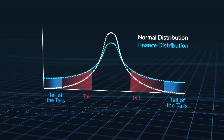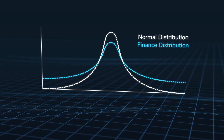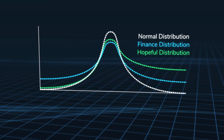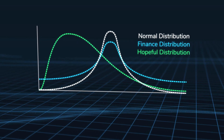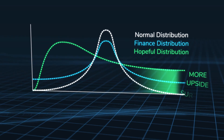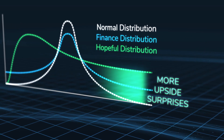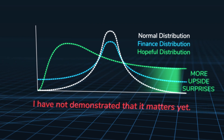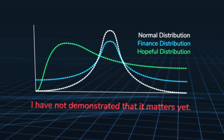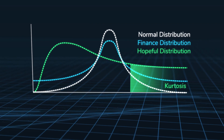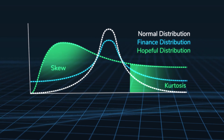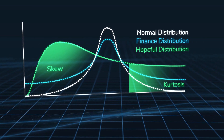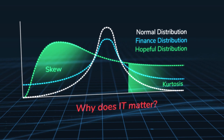You could be saying: I'd like fatter tails on the upside for a bullish bet, or I'd like positive skew, or both — it makes sense, it's a logical argument. But I haven't proven it yet. I have not demonstrated that it matters yet — that's what I'm going to do now. I'm talking about the fatness of the tails, which we can call kurtosis, and the asymmetry in the return distribution, which we can call skew. So why does it matter?